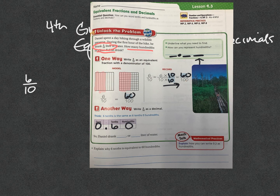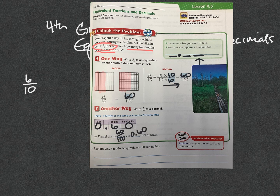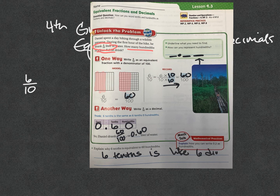It's the same as six tenths. So six tenths is the same as 60 hundredths. And when you think about it, that makes sense because we've been talking about the tenths place being dimes. Well, how much money do you have when you have six dimes? You have 60 cents. So Daniel drank 60 hundredths, or 0.60 liters of water. Why is six tenths equivalent to 60 hundredths? Because six tenths is like six dimes, and that is 60 cents — zero dollars and 60 cents. You could have explained that however made sense to you.